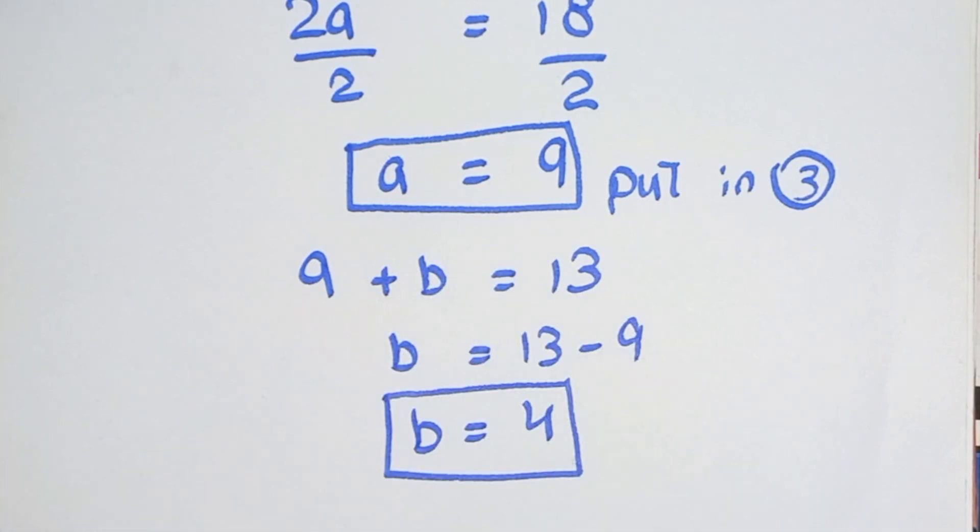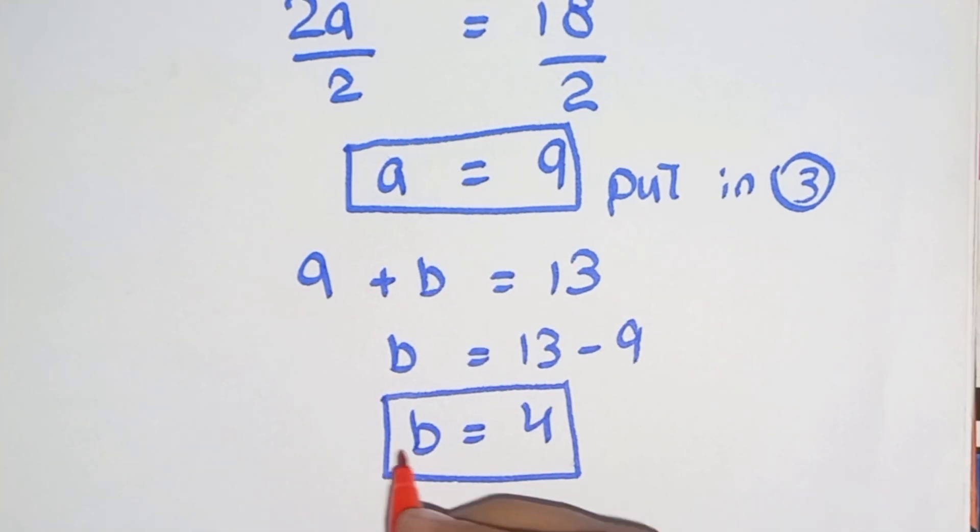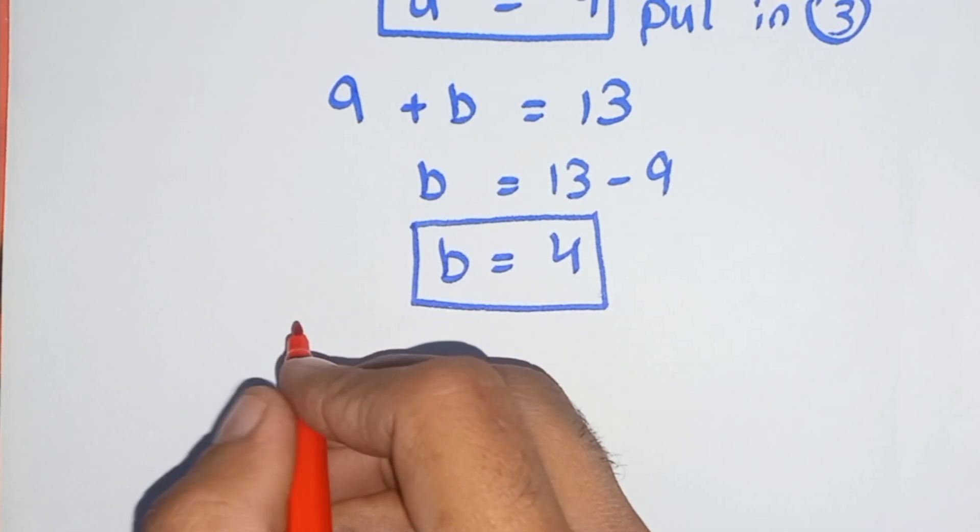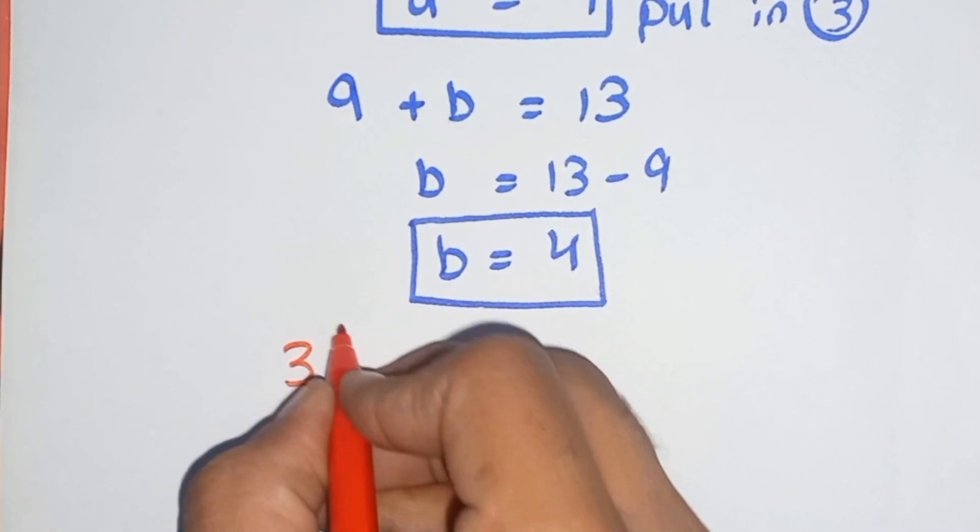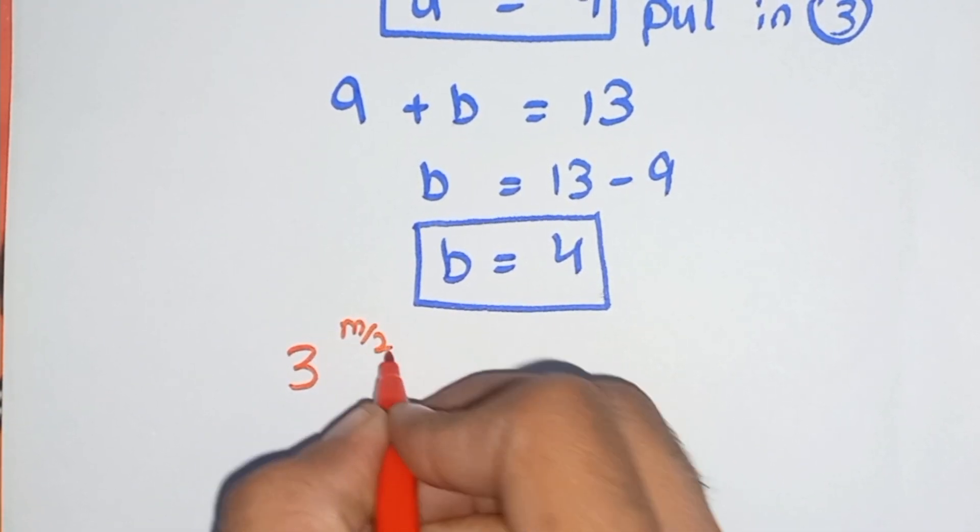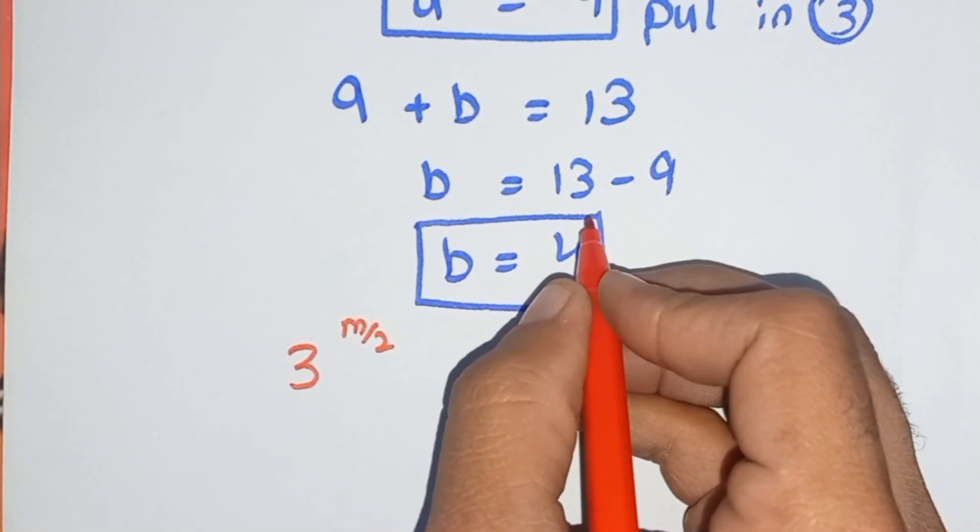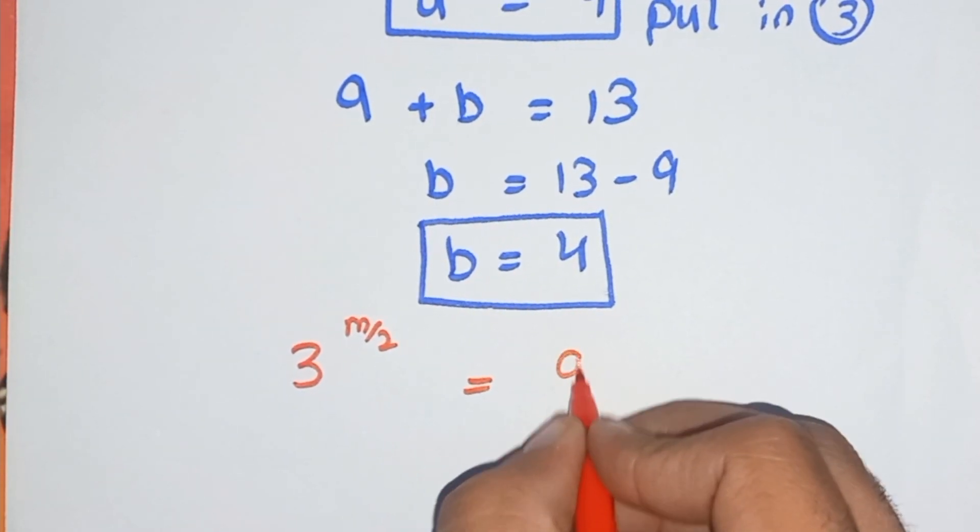So put back in equations 1 and 2. As we put back in the equations, the equation will be 3^(m/2) equals a which is 9.